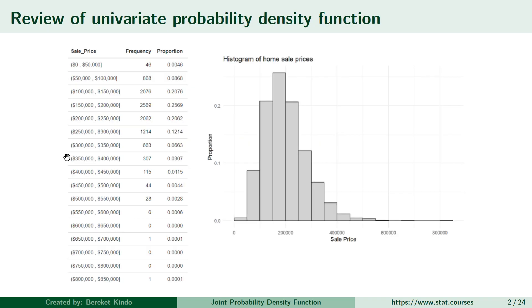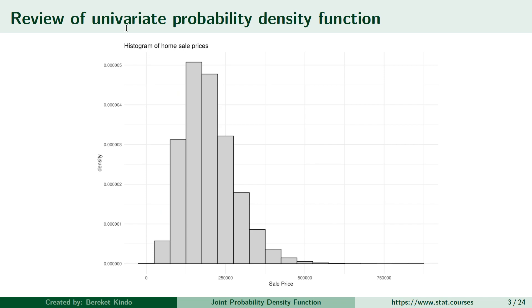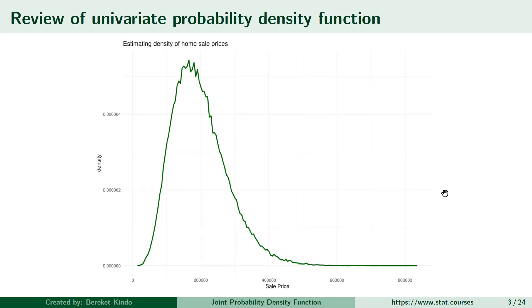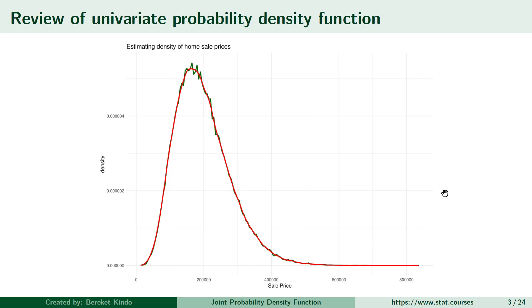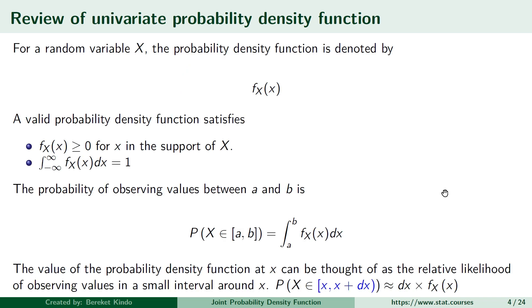In a prior lesson, I gave an intuitive introduction to the probability density function of a univariate continuous random variable. For a continuous random variable, the probability density function at a specific point can be thought of as the relative likelihood of observing values in a very small interval containing that specific point. We used an example starting with the construction of a histogram of home sale prices data, then added constraints to bar heights so the area covered adds up to 1, giving us a density-based histogram. As we decreased the bin interval length, we approximated the probability density function of home sale prices, and formally defined what a PDF is and the conditions it must satisfy.